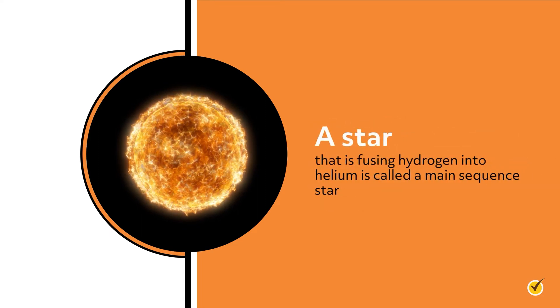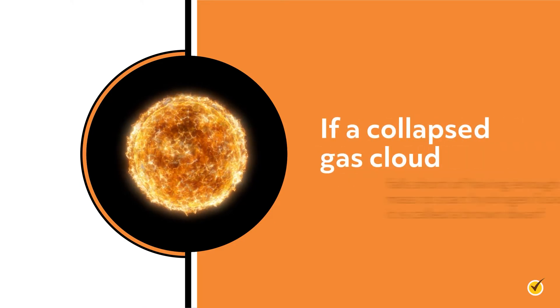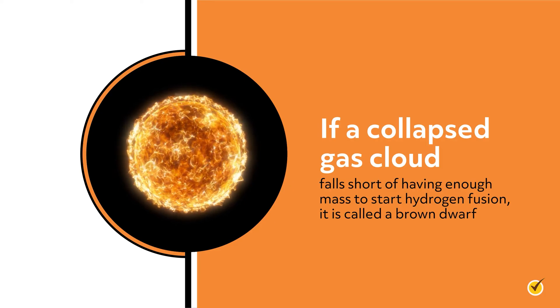A star that's fusing hydrogen into helium is called a main-sequence star. If a collapsed gas cloud falls short of having enough mass to start hydrogen fusion, it's called a brown dwarf.